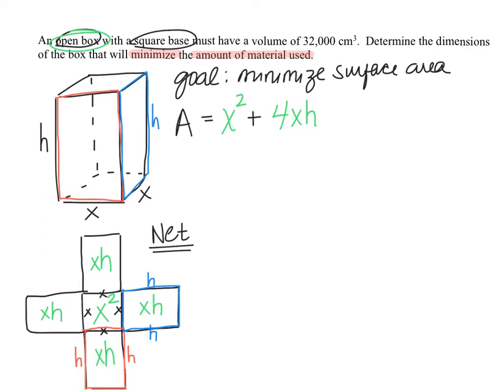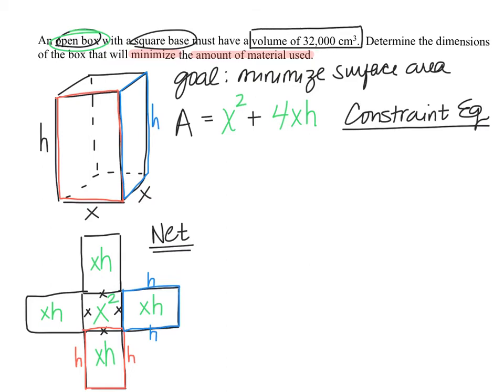Notice this equation has two inputs, X and H. We want one input and one output to find a minimum. So we reread the question and look for a constraint — something we're limited by. The problem states the box must have a volume of 32,000 cubic centimeters, no less, no more. So volume is our constraint, and we set volume equal to 32,000.